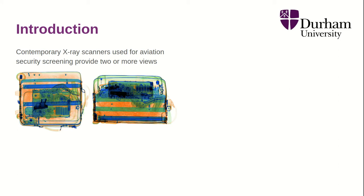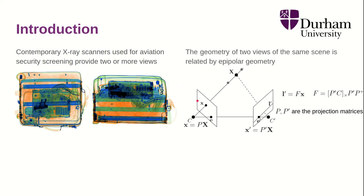The problem we are addressing is to use information from multiple views of an x-ray scanner to improve threat item detection. The geometry describing this setup is known as epipolar geometry. In epipolar geometry, given one point in one view, we cannot know exactly where it appears in the second view, but we know it must lie along a line — known as the epipolar line. This line can be constructed using the fundamental matrix F, which is built using the projection matrices of each image and the relative position between the cameras.